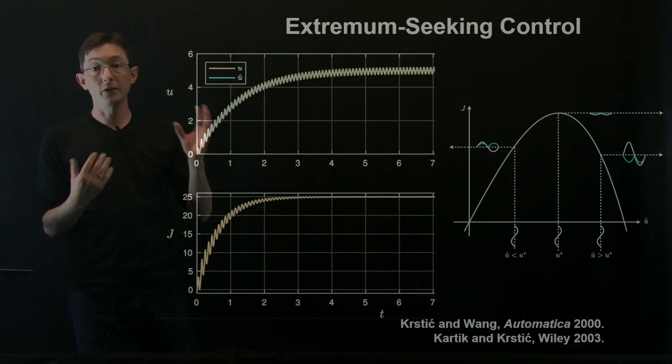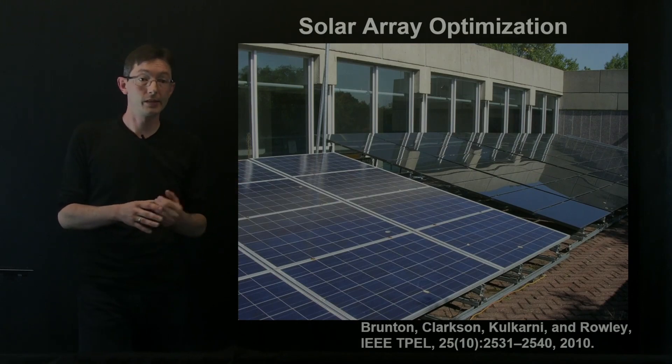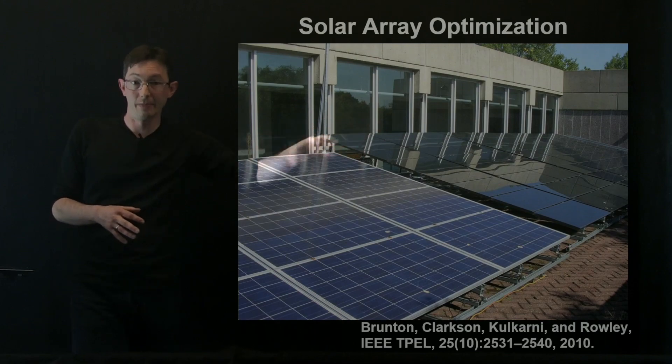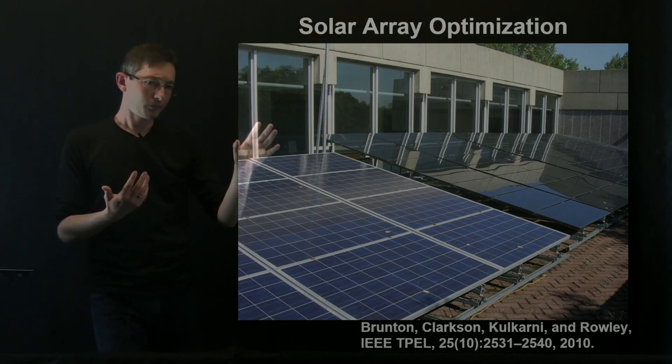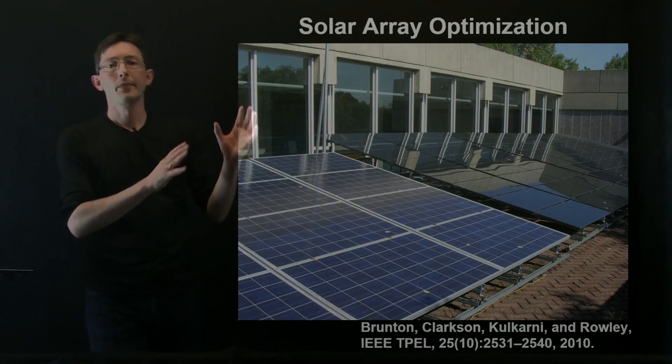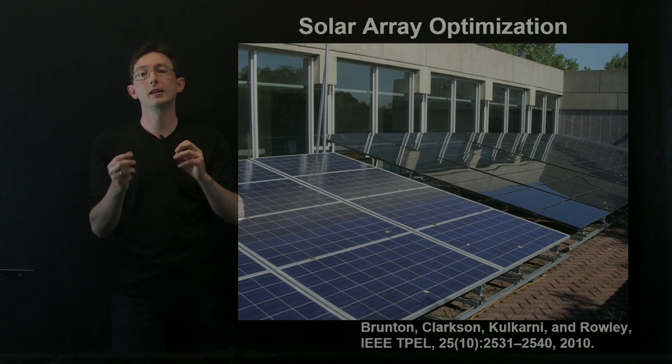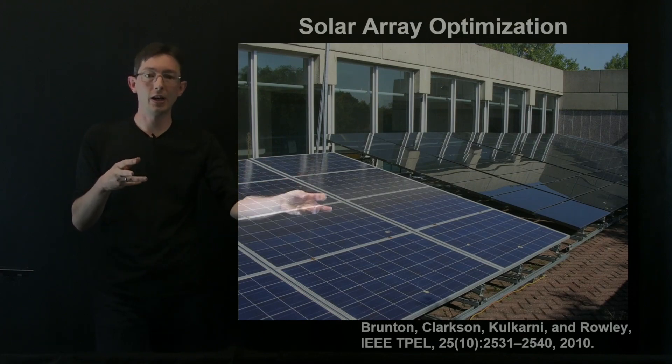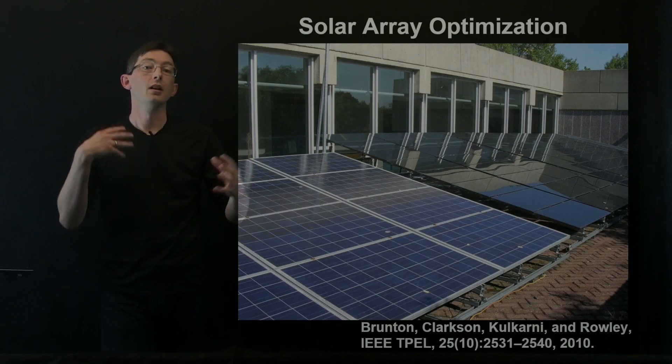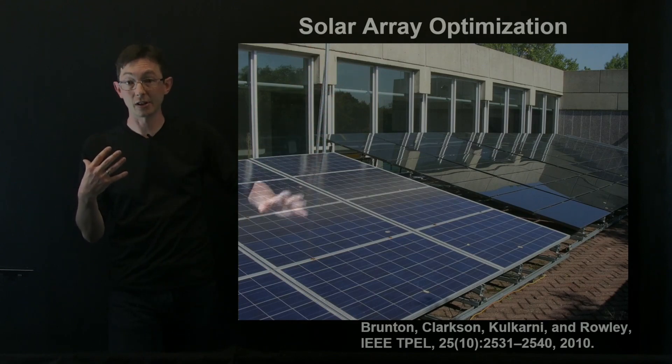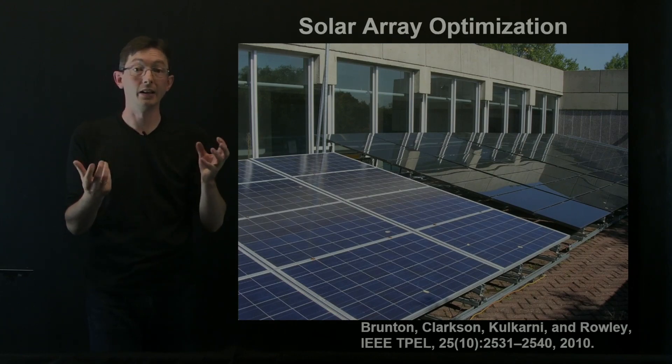So one of the first systems I applied extremum seeking control to was solar array optimization. So this is a solar array, actually a pair of solar arrays that we had outside of our lab in Princeton when I was a grad student. You can read all of the details in this paper down here. But the basic idea is that when you're operating a solar panel array, you have to change the operating conditions. You have to change the set current or the set voltage depending on the time of day or the cloud cover.